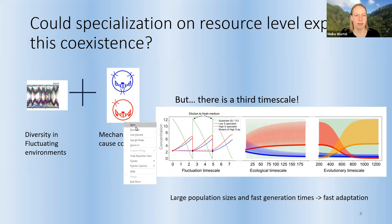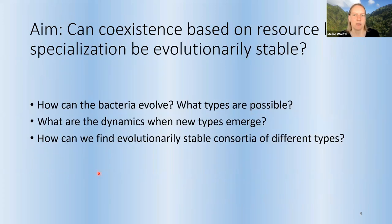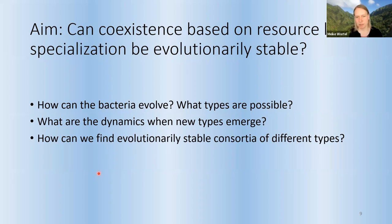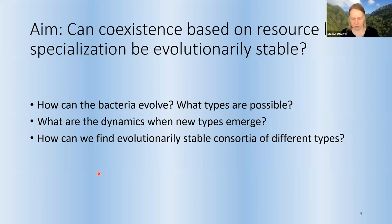We set out to study this: what happens if we include evolution in the scenario? There are some ingredients needed. First, when we incorporate evolution in these models, we have to know how bacteria can evolve — what kind of properties can they have? Then, what if a new type emerges? What are the dynamics — do they invade, do they take over the population? And then next, can we indeed find evolutionary stable consortia of different types?